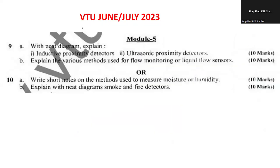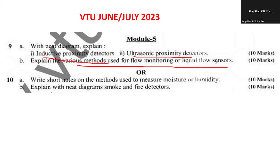For June-July 2023, I have seen some important questions. With the help of a neat diagram, explain the inductive proximity detector and ultrasonic proximity detector. Proximity sensors are mainly used to identify the presence of an object. Also, explain the various methods for flow monitoring and liquid level flow sensors. Both questions carry 10 marks.